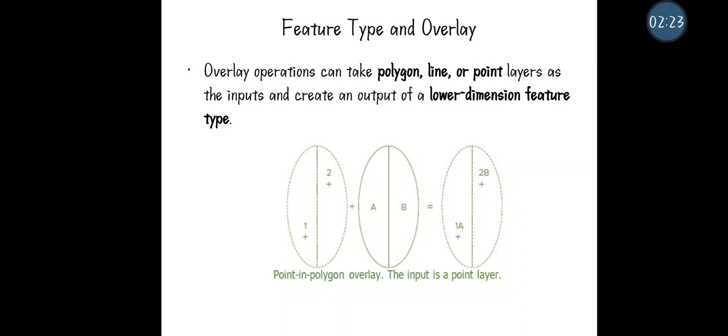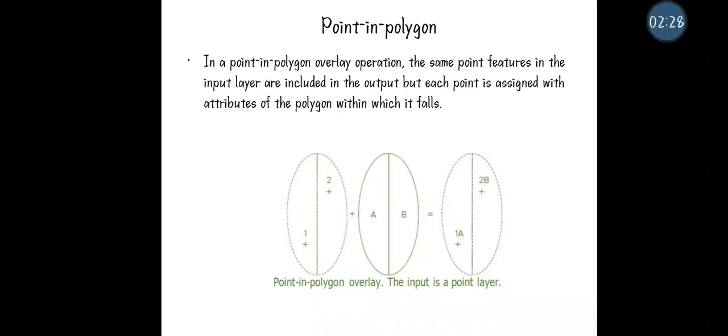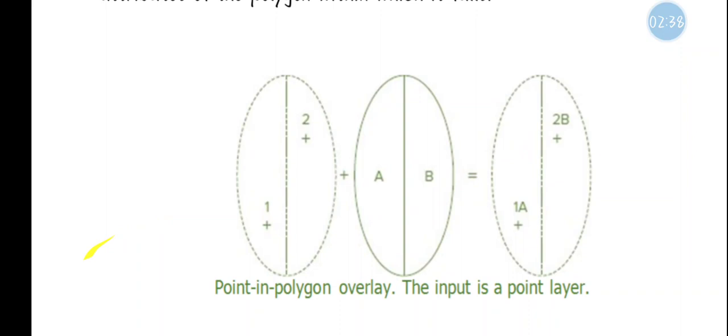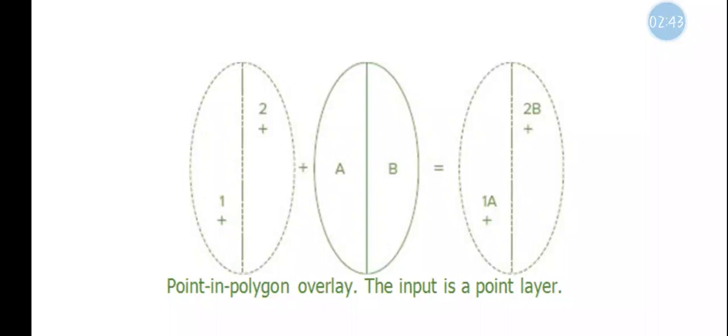There are three types in overlay. The first is point and polygon. In this example, the first input contains points — specifically point one and point two. The dotted lines shown are only for understanding purposes and should not be considered as actual features in the input.